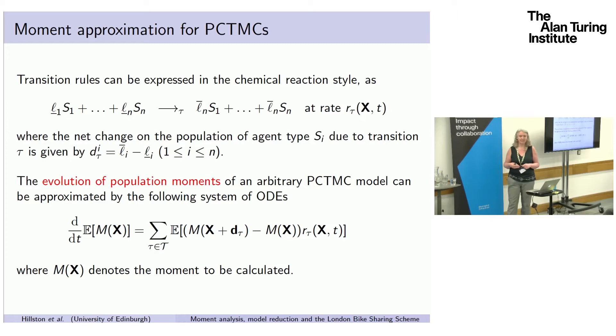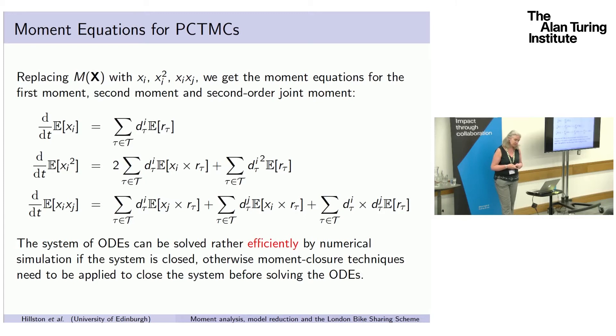In the case where we want the mean, it's a straightforward equation where we can see that the rate of change of the mean is just the updates times the expected rate in that state, and so on for the variance and the joint second moment. These ODEs can usually be solved efficiently by numerical methods if they're closed. In our case, they are closed. But the difficulty is actually they're too big. When we look at the system, we get quite a number of states.